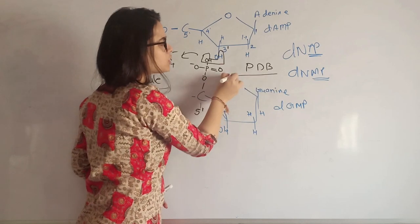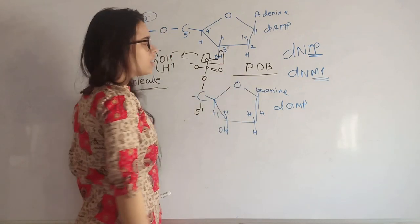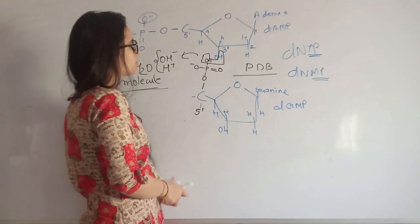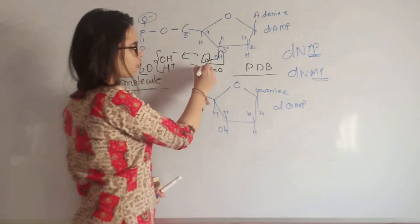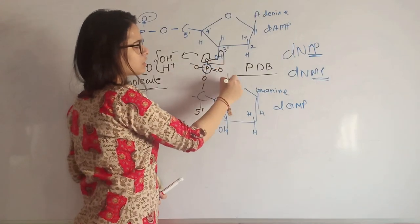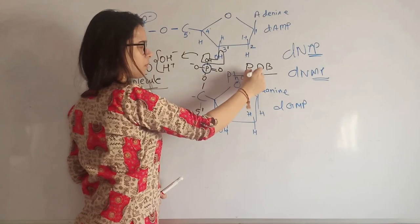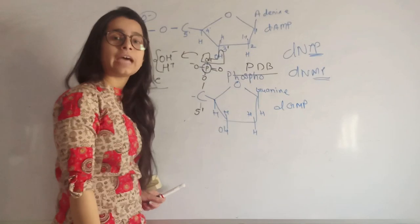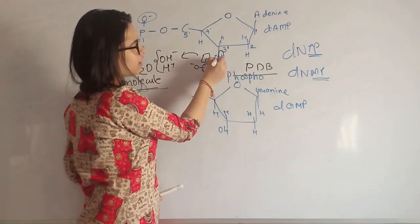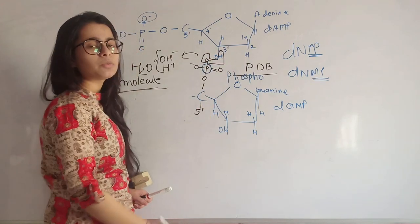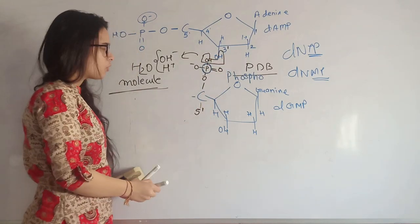H plus ion from the three prime hydroxyl group and OH ion from the five prime phosphate group is removed, which gives an H2O molecule. The resulting bond that is formed is known as phosphodiester bond. Why phosphodiester bond? Because it has a phosphate group in it, so it is known as phospho.